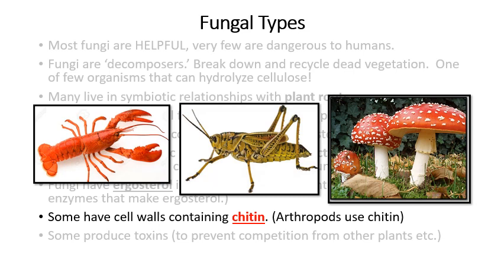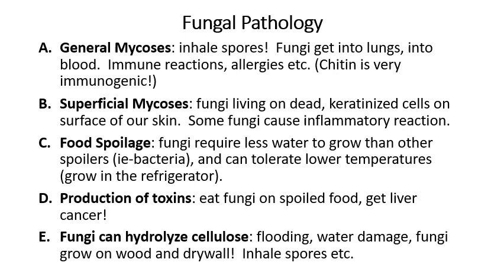What do mushrooms have in common with insects and crustaceans? Several things: all three are eukaryotes, all three descended from the Unikonta, and all three have chitin in their outer layers.